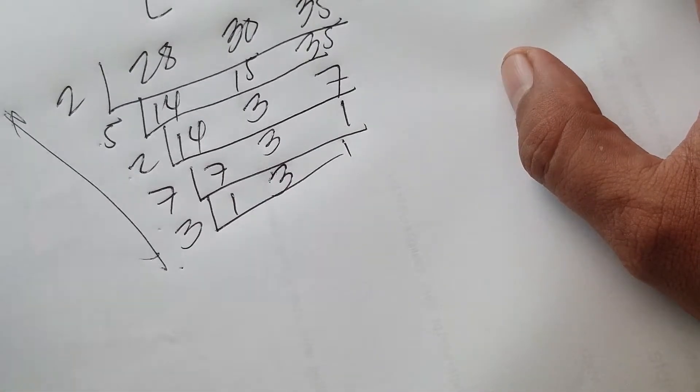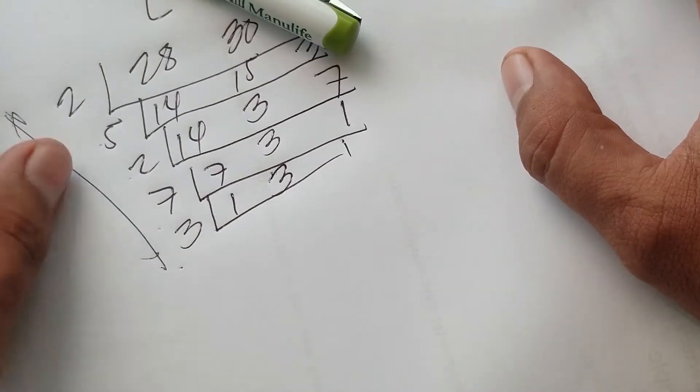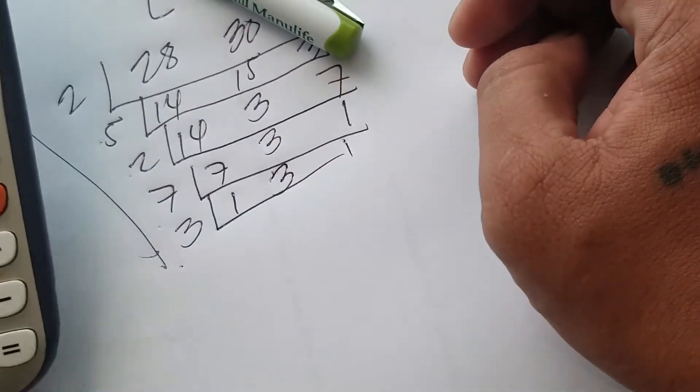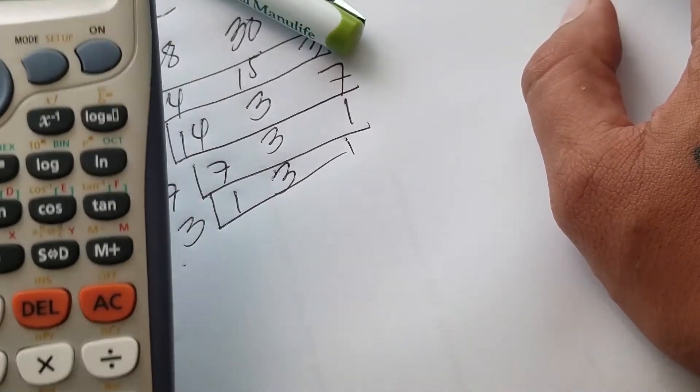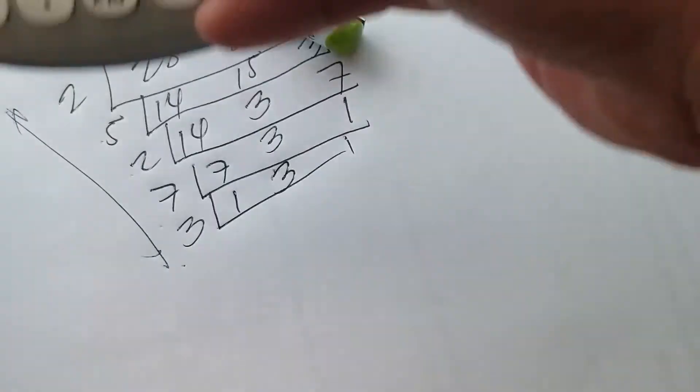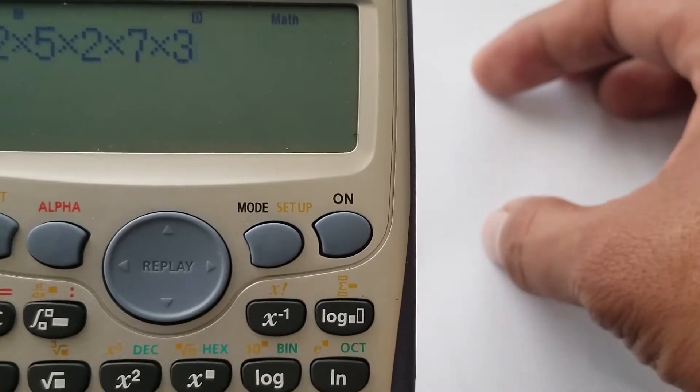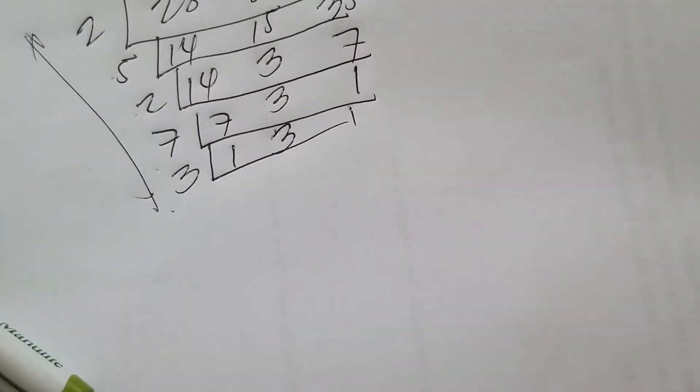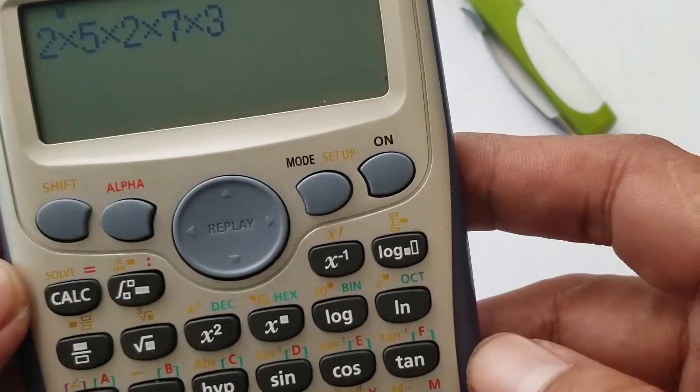And let's use the calculator and get the result guys. So we have 2 times 5 times 2 times 7 times 3. So I have here 2 times 5 times 2 times 7 times 3. So let's press the equal